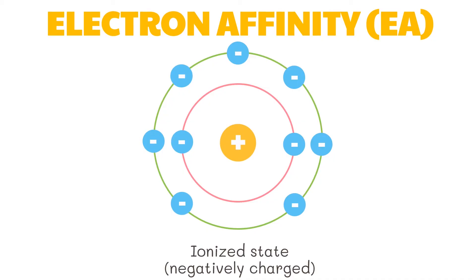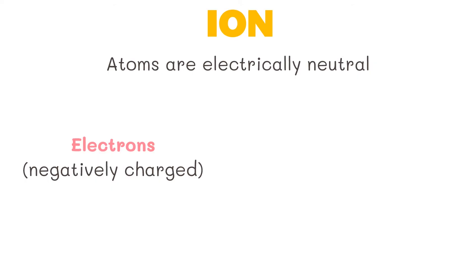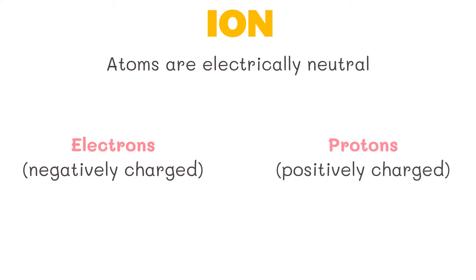Electron affinity is the energy that an atom releases when it accepts an electron. It is therefore a measure of the tendency of an atom to attract an electron. Atoms are electrically neutral despite them having charged subatomic particles, like the negatively charged electrons and the positively charged protons, because the number of each are equal. Thus, an atom is stable.